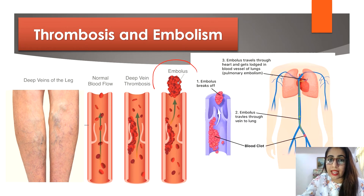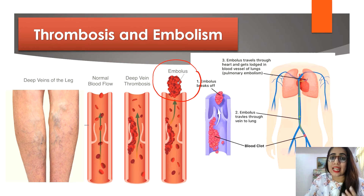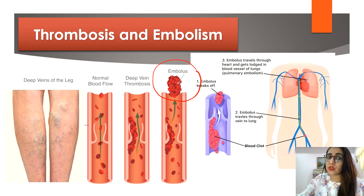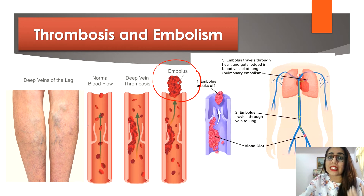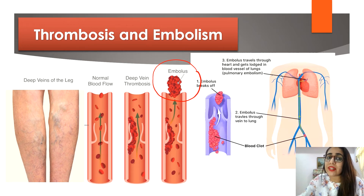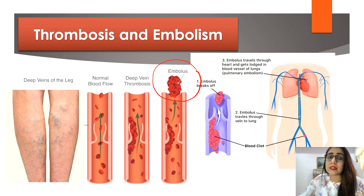Embolism happens when an embolus gets stuck in a tiny blood vessel and blocks blood flow. Thrombosis is triggered when wounded cells in the blood vessel produce thromboplastin and start the clotting process. A defect on the inner surface of the vessel wall, or blood flow that is too slow, may cause clotting factors to pile up and initiate clotting.